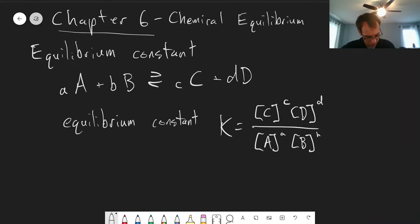And this is a constant for a particular temperature, and this is what it is at equilibrium. So once the system reaches equilibrium, this ratio of the concentrations of products divided by the concentration of reactants is a constant for any given reaction, provided that the temperature stays constant.